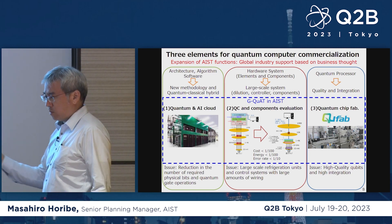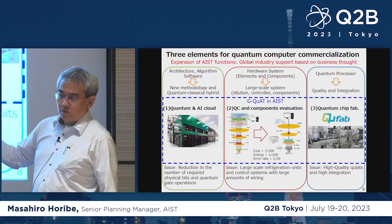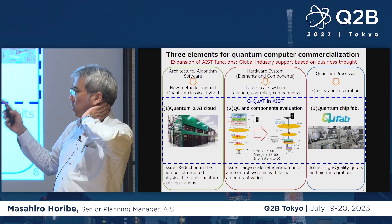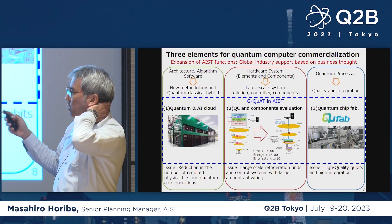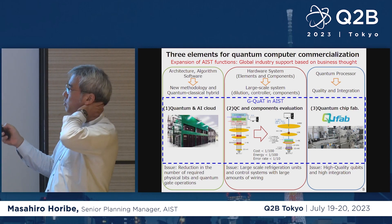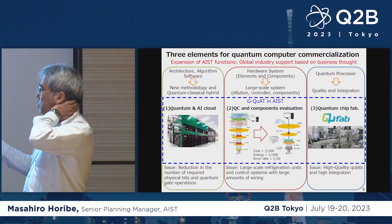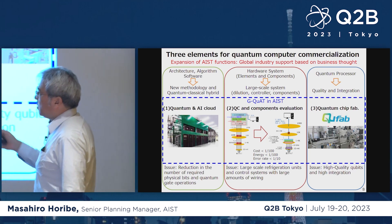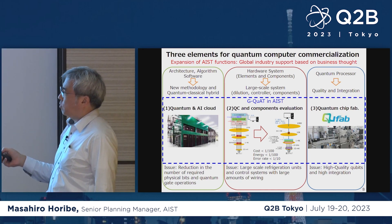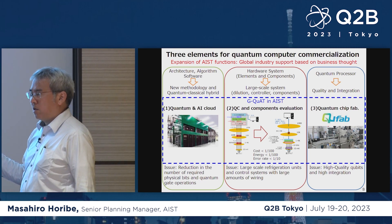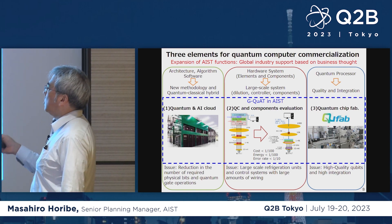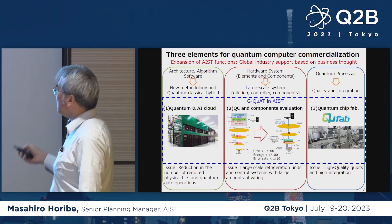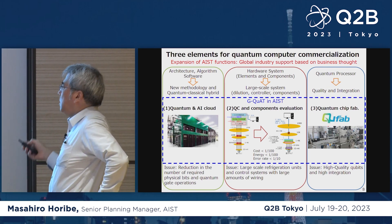Our organization, AIST, has also been involved in utilization, working on simulators and algorithmic development. We have supercomputers running quantum simulators. For the supply chain, procurement of parts, distribution, and quality of those parts should be enhanced. We should work together not only with Japanese companies but also with overseas suppliers for the effective development of parts and components. AIST will support some of the evaluation equipment for those purposes.